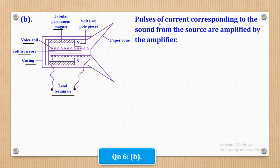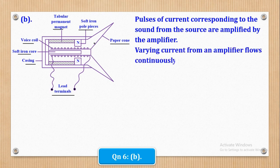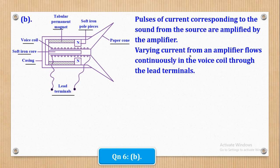So first we shall say, the pulses of current corresponding to the sound from the source are amplified by the amplifier. Now we shall say that varying current from an amplifier flows continuously in the voice coil through the lead terminals.